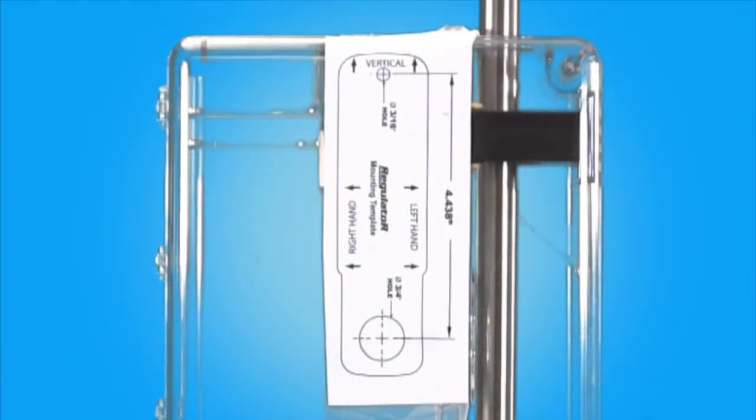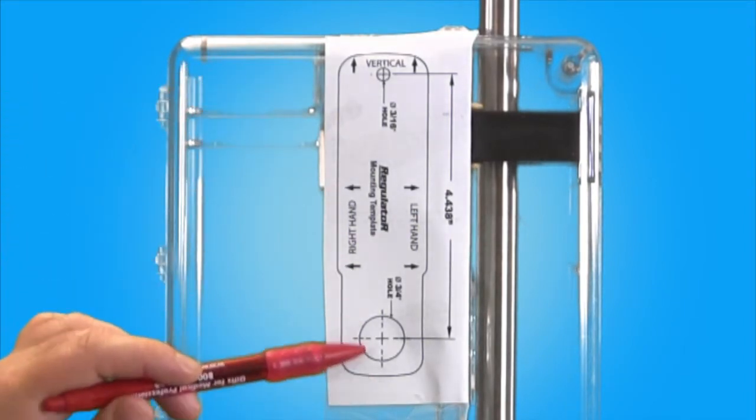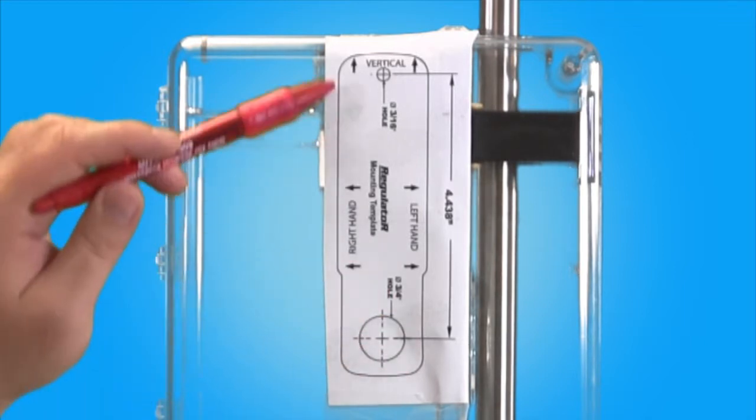To begin, attach the template to the outside of the box drawer or door. Mark the lower three quarter hole and upper three sixteenth hole.